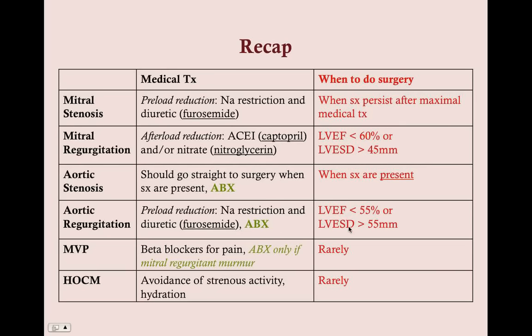Any valvular condition can cause atrial fibrillation, so if afib is present on EKG, treat with digoxin and warfarin in addition to medical or surgical therapy. Mitral valve prolapse: beta blockers for chest pain, antibiotics only if there is a concurrent regurgitant murmur. HOCM: avoid complications — arrhythmia and sudden death — by avoiding strenuous activity and maintaining hydration. Both MVP and HOCM rarely ever need surgery and surgery will never be the right answer on the USMLE.